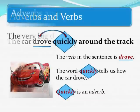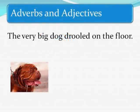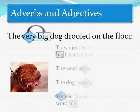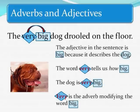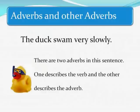Adverbs and adjectives — 'The very big dog drooled on the floor.' The adjective in the sentence is 'big' because it describes the dog. The word 'very' tells us how big the dog is — very big. 'Very' is the adverb modifying the word 'big.'